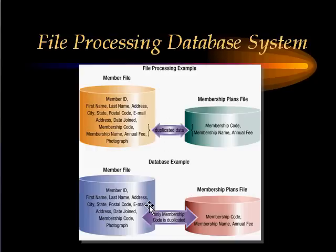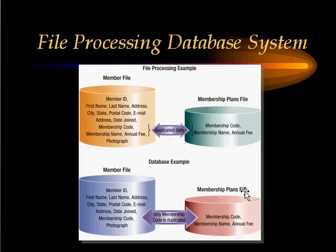There is a key difference between the file processing system and the database processing system. In the database processing system, we still keep two files — known as tables, or in database terminology, relations. We keep the member file and the membership plans file. However, the data kept in the member file does not duplicate any information kept anywhere else.